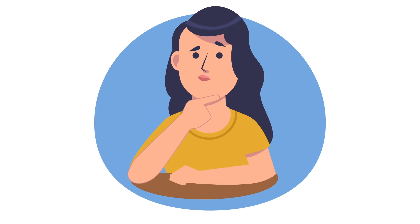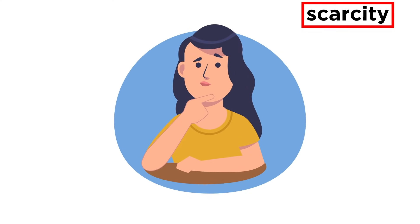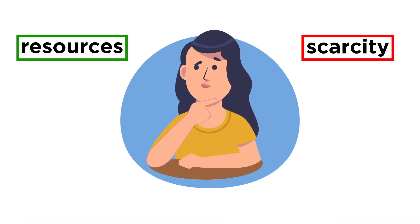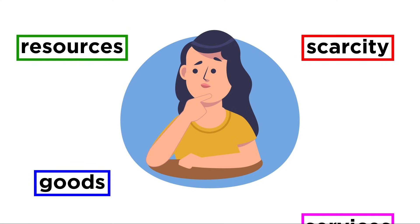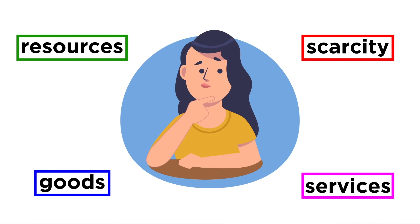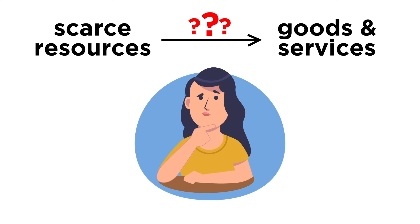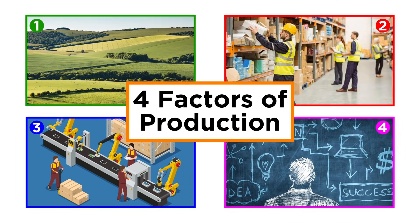At this point in the series, we understand the concept of scarcity, and we also know how to define resources, goods, and services. But how are scarce resources turned into goods and services? To answer that question, let's take a look at the four factors of production.